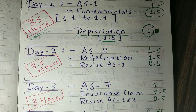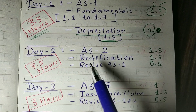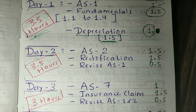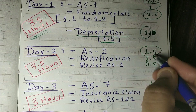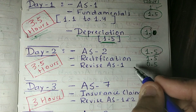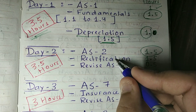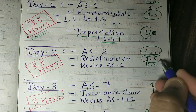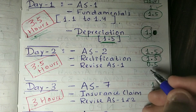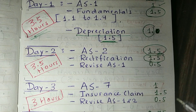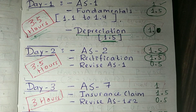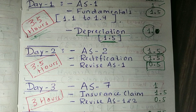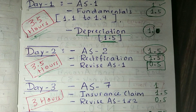On Day 2, you have to learn Rectification of Errors, which is also part of the Fundamentals of Accounting chapter. This will take 1.5 hours. In addition to that, you have to revise Accounting Standard 1, which will take half an hour. So Day 2 will also take a total of 3.5 hours.